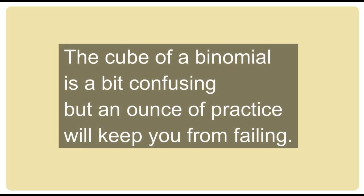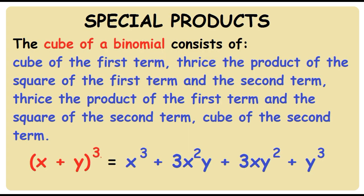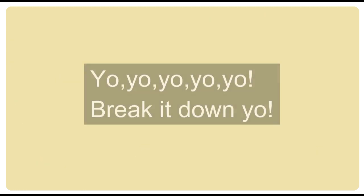The cube of a binomial is a bit confusing, but an ounce of practice will keep you from failing. The cube of a binomial consists of: cube of the first term, thrice the product of the square of the first term and the second term, thrice the product of the first term and the square of the second term, cube of the second term.